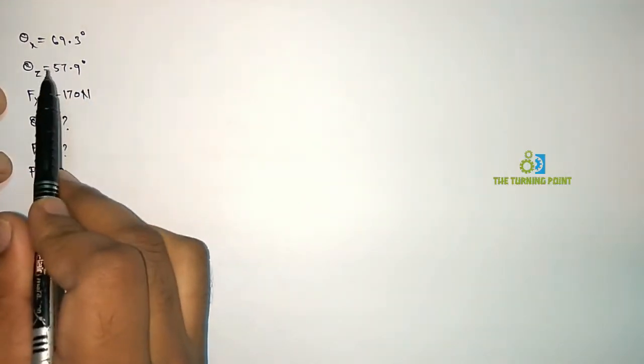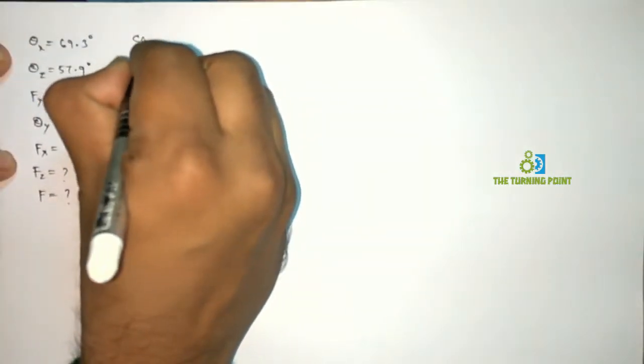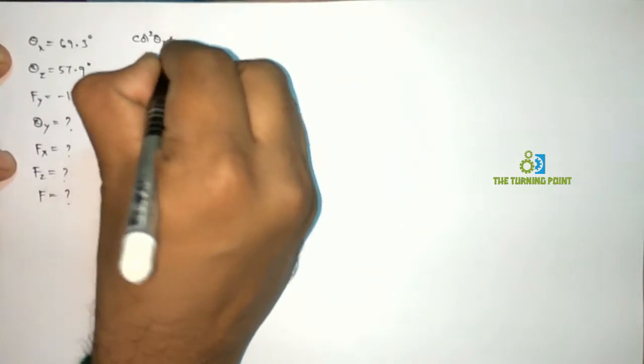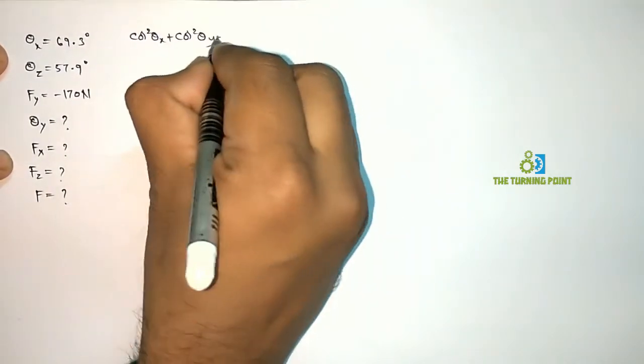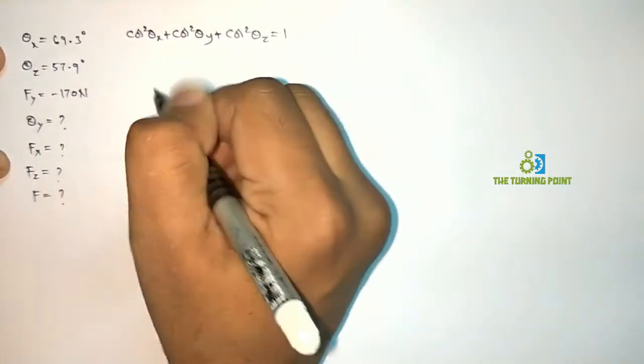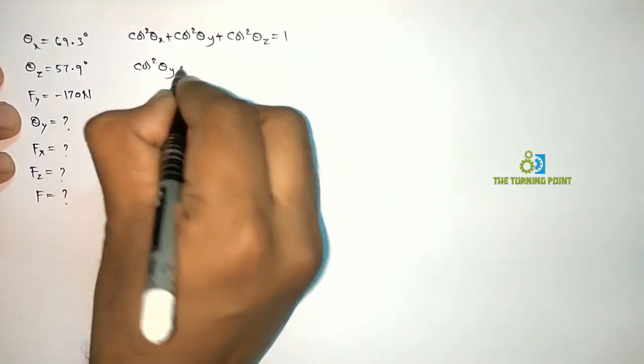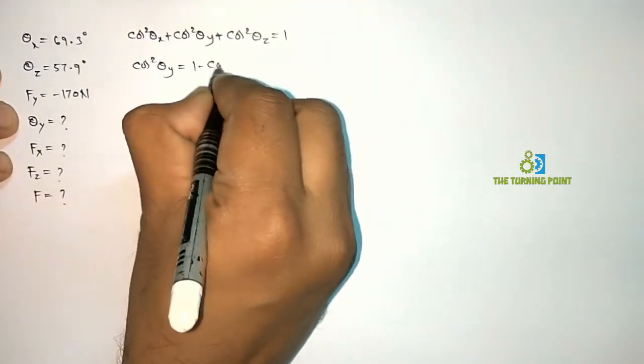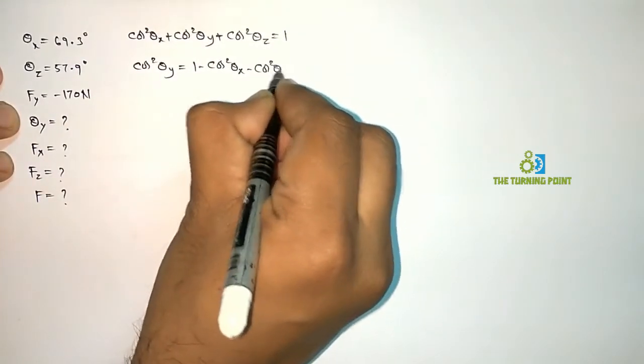So when two angles are there, if you want to find third angle, use this relation. Cos square Theta x plus Cos square Theta y plus Cos square Theta z is equal to 1. So you want to find Theta y from this one. So subject it to Theta y. Cos square Theta y is equal to 1 minus Cos square Theta x minus Cos square Theta z.